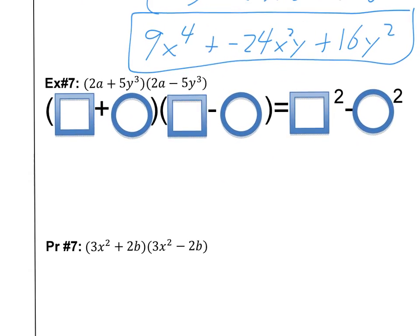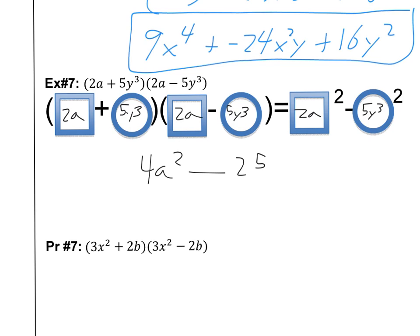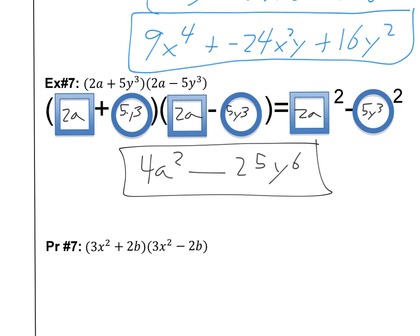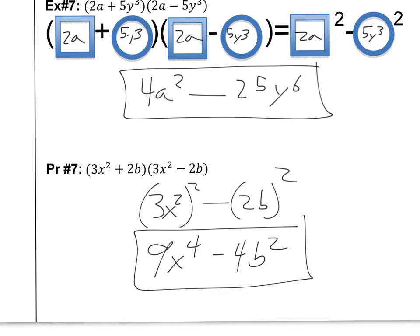Now let's do a couple of difference of squares problems with complex terms. We have something plus something and the same first thing minus the same second thing — so we use the difference of squares pattern. With 2a plus 5y cubed times 2a minus 5y cubed: 2a squared is 4a squared, 5 squared is 25, and y cubed squared is y to the 6th since we multiply the exponents. So the answer is 4a squared minus 25y to the 6th. For the last practice problem, 3x squared squared is 9x to the 4th, and 2b squared gives 4b squared, so the answer is 9x to the 4th minus 4b squared.